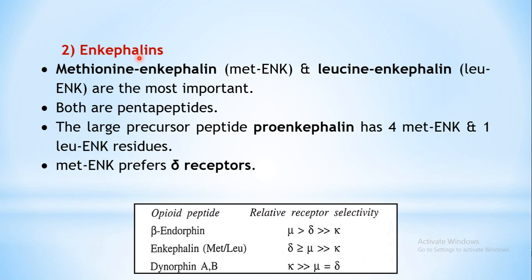The next family is enkephalins. There are two main enkephalins: methionine enkephalin (Met-ENK) and leucine enkephalin. Both are pentapeptides and the precursor from which they are derived is pro-enkephalin. This pro-enkephalin gives rise to four methionine enkephalin and one leucine enkephalin residue. These enkephalins have high affinity towards the delta opioid receptor, less mu receptor interaction, and very little kappa interaction - they mainly interact with the delta receptor.